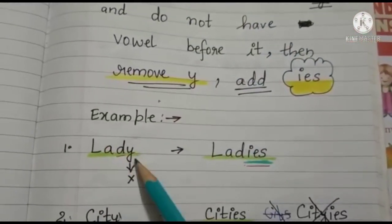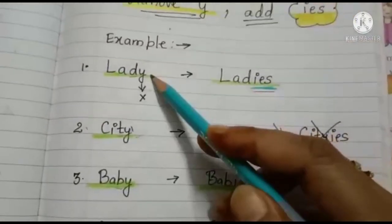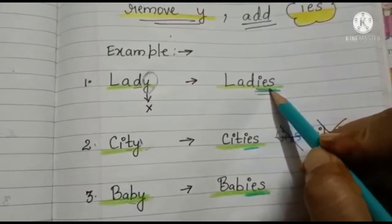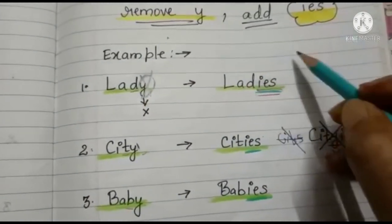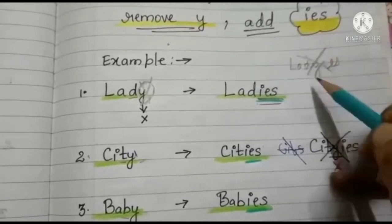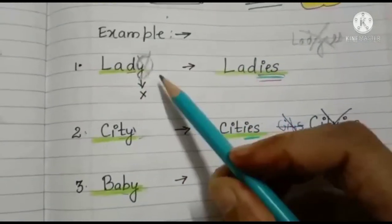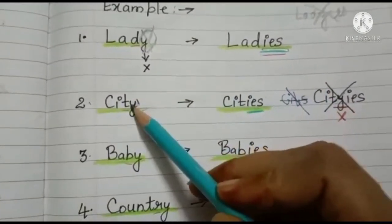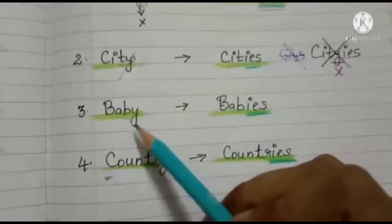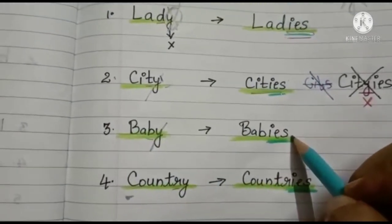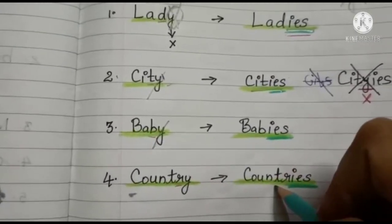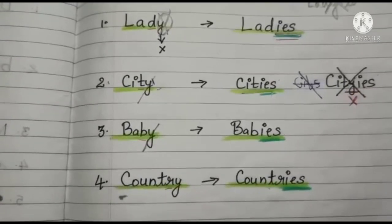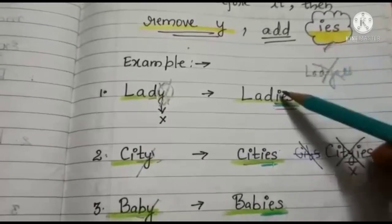Rule three: if the noun is ending with letter 'y' — like lady, city, baby — you change it to plural by removing 'y' and adding 'ies'. City → remove y → add 'ies' → cities. Baby → babies. Country → countries. Remember: if the noun ends with 'y', remove 'y' and add 'ies'.